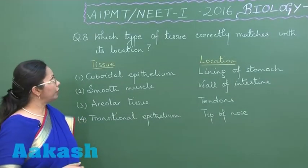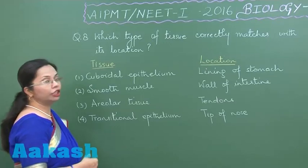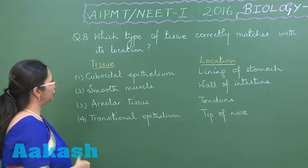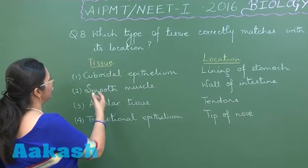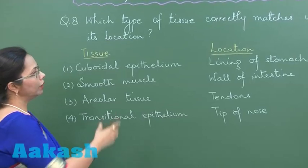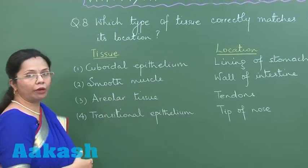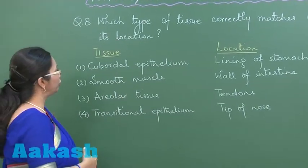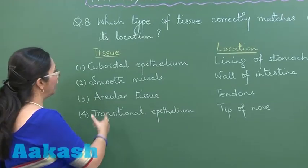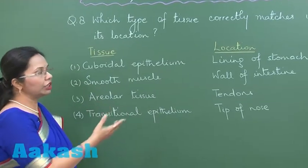In question number eight, we have to match the tissue with its correct location. Cuboidal epithelium lining of stomach is wrong because the stomach lining is made up of columnar epithelium. Smooth muscle present in the wall of intestine is correct.